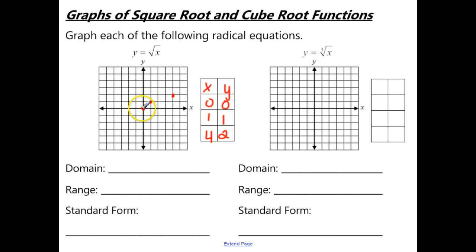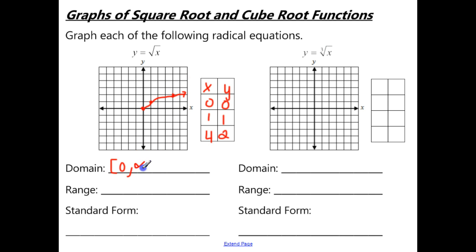Once you plot those points you can see the pattern of where the graph is going. The domain starts at 0, includes it, and goes to positive infinity. The range — the lowest y-value is also 0, which is included, and it goes up forever to positive infinity.